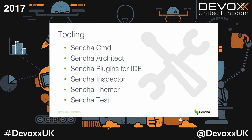There is not only the framework but also other tools that can increase your development speed or improve application quality. Sencha Cmd allows you to build and minify your application. Architect is a special tool that lets you develop your application by dragging and dropping components onto a canvas, configuring them, and it will generate all the code for you. You can also use different plugins for your favorite IDEs that allow you to generate code, do code auto-completion, and refactor your code. Inspector lets you inspect and debug Ext.js applications. There is also a theming tool and a testing tool that helps you create unit and end-to-end tests, including a special event recorder for recording tests based on user interactions.